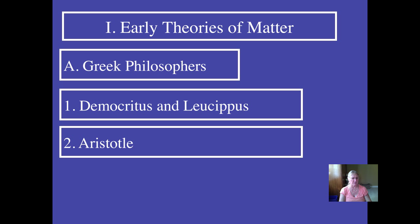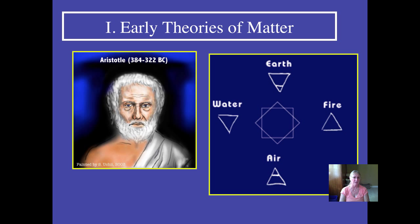Now, following roughly about the same time — though not exactly — there was Aristotle, also a Greek philosopher, who existed between 384 and 322 BC. Democritus was around 460 BC. Even back then, scientists were kind of competitive with each other. Aristotle said no — that all matter is made up of just four basic elements: earth, air, fire, and water. Again, nothing really to back that up, just a philosophical statement.